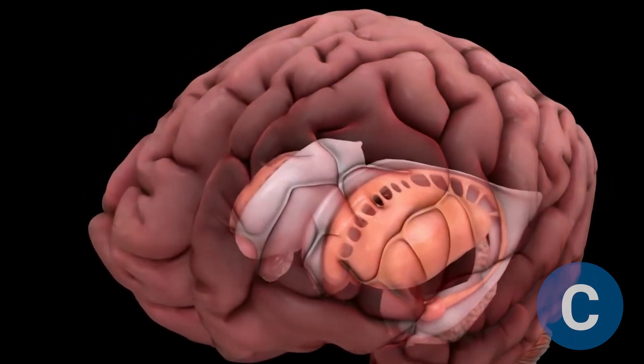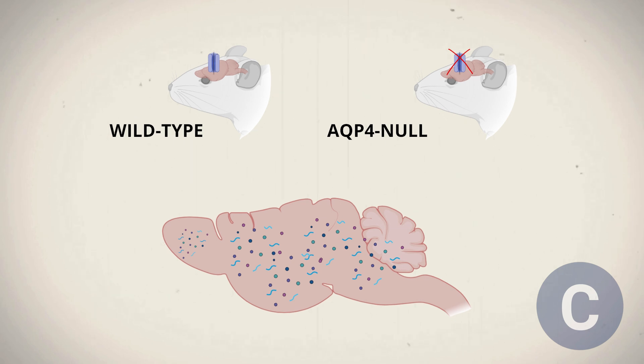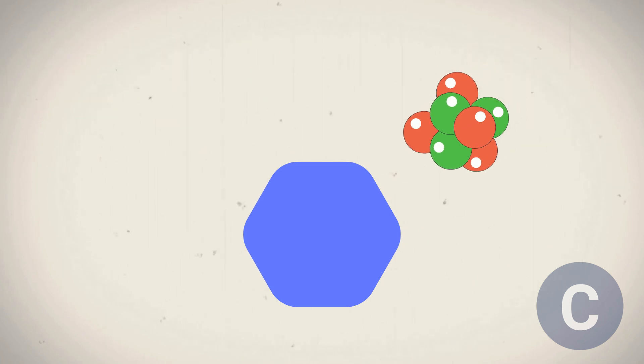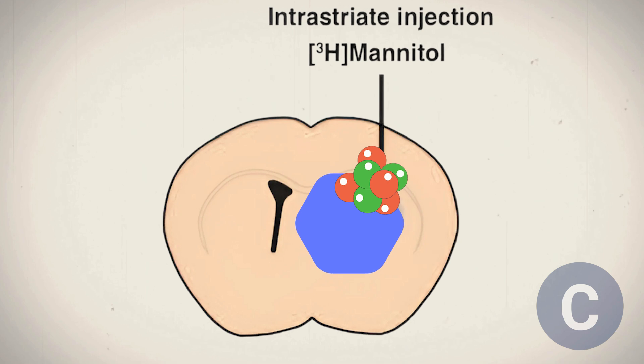Using wild-type mice with aquaporin-4 and AQP-4 null mice without aquaporin-4, the researchers examined how the bulk flow of interstitial fluid, supported by aquaporin-4, influences the clearance of solutes and proteins from the brain. To monitor this process, they used mannitol, tagged with a radioactive isotope as a tracer, and injected it directly into the brain tissue, specifically into the striatum of the mice.